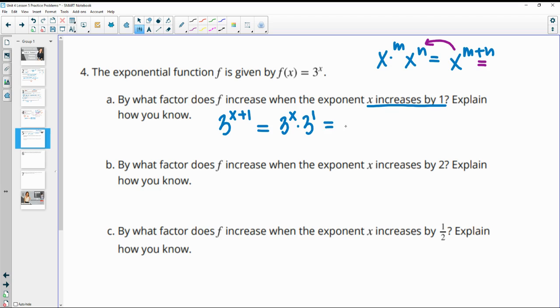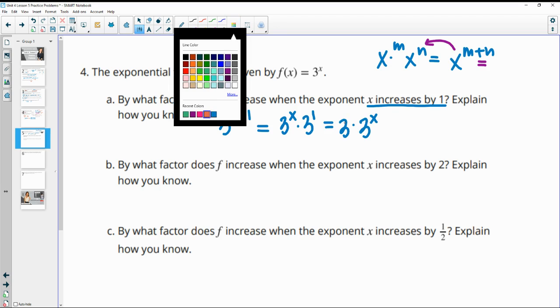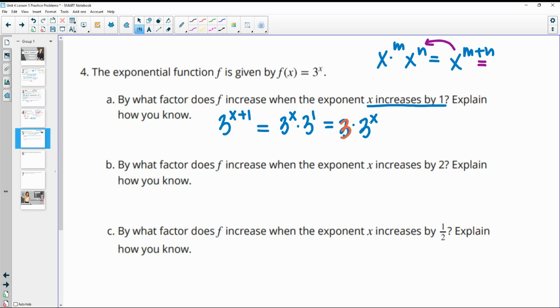So then this helps us calculate this. 3 to the 1st is just 3. So we really have 3 times 3^x. So that means that this is just 3 times bigger than the original. So it impacts it by a factor of 3.